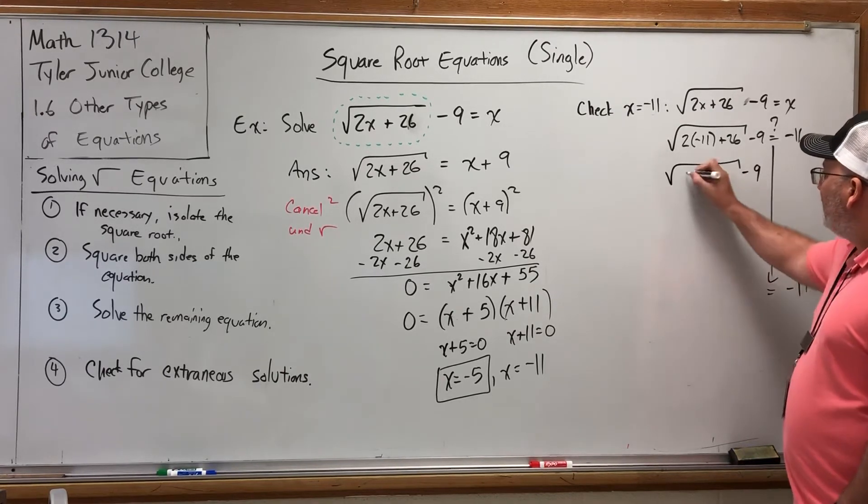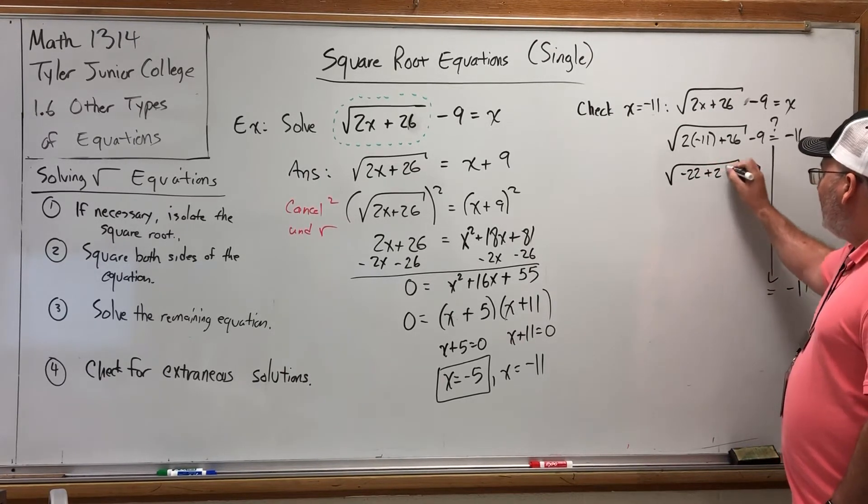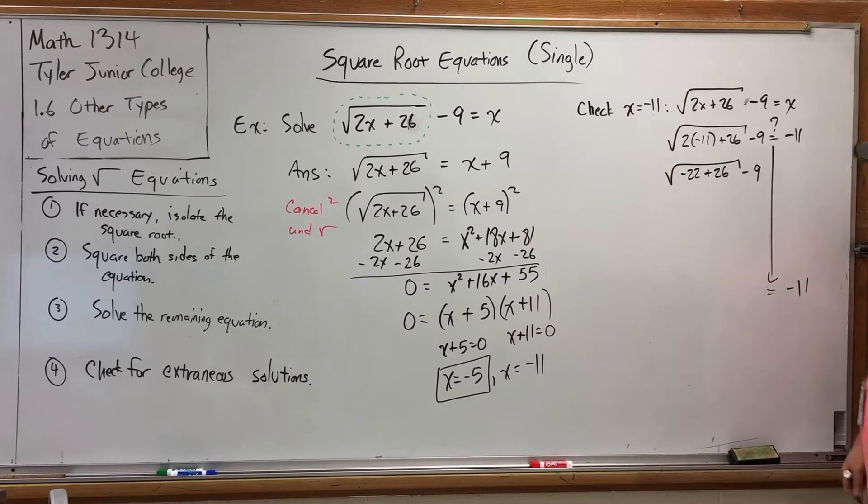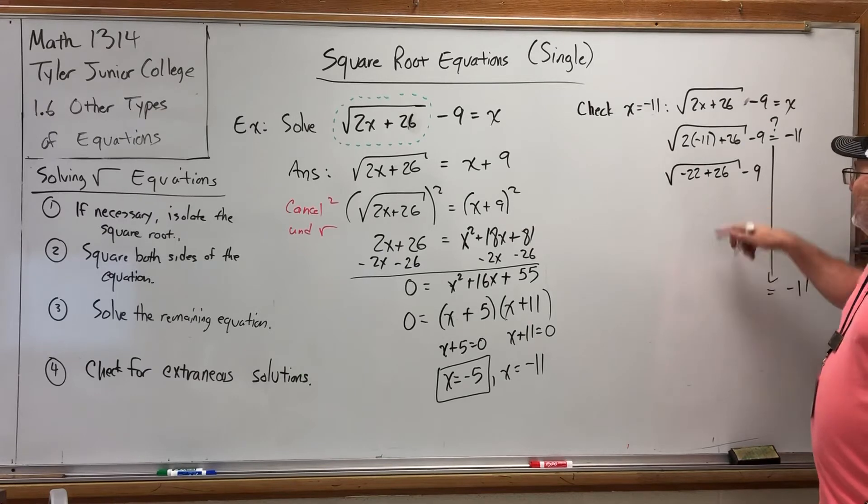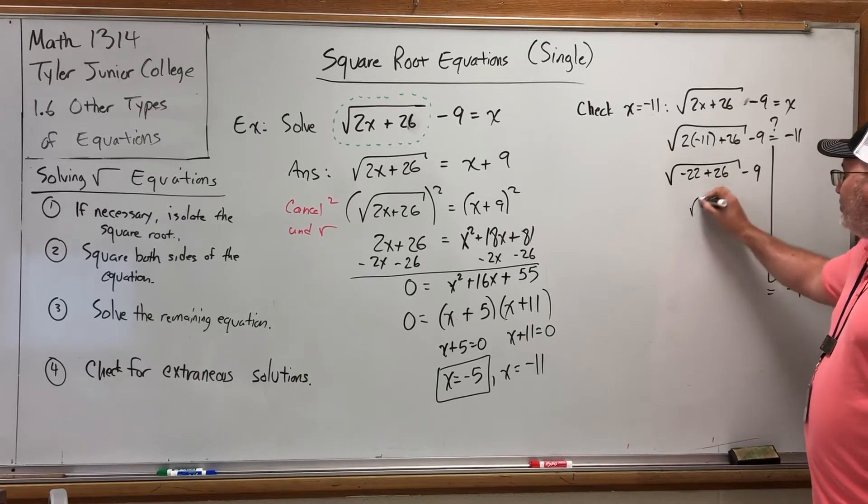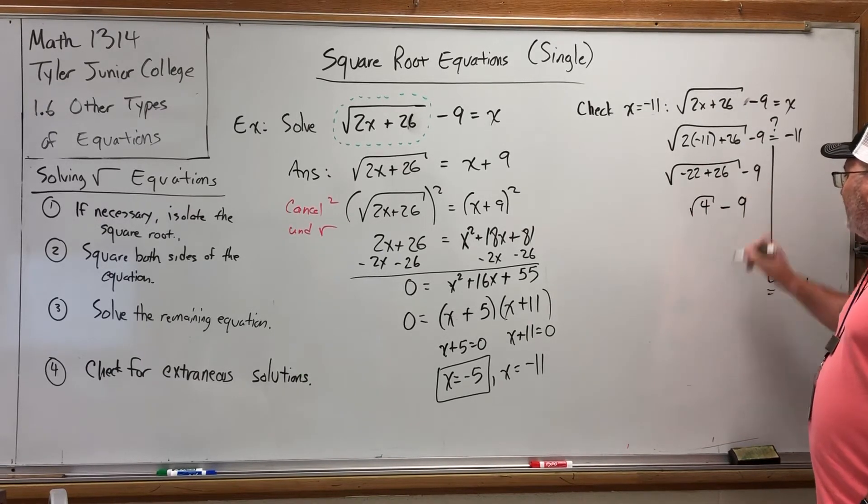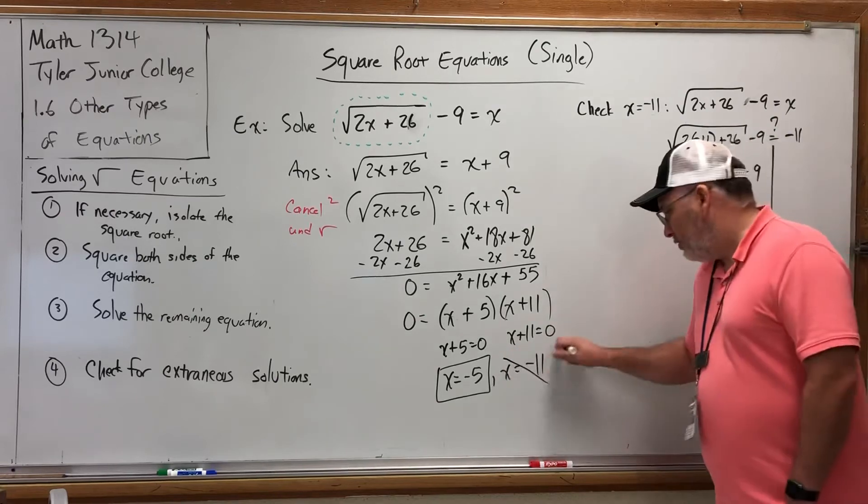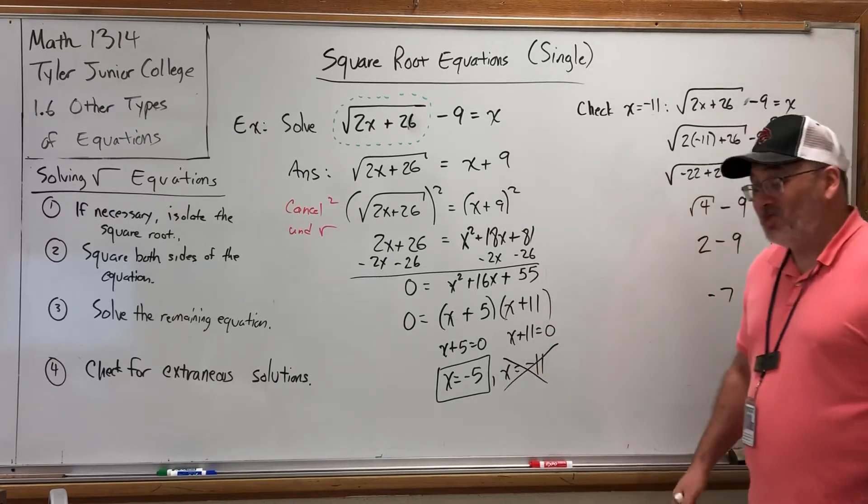2 times negative 11 is negative 22. Have not added the 26. Have not square rooted. Have not subtracted 9 yet. Negative 22 plus 26 is 4. We haven't square rooted yet. We haven't subtracted 9 yet. The square root of 4 is 2. Haven't subtracted yet. 2 minus 9 is negative 7. Those are not equal. Negative 11 is an extraneous solution.